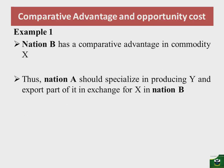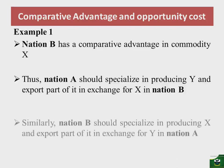Since nation A has a comparative advantage in commodity Y, we have already stated that nation B has a comparative advantage in commodity X. Therefore, nation A should specialize in producing Y and export part of its output in exchange for commodity X from nation B.